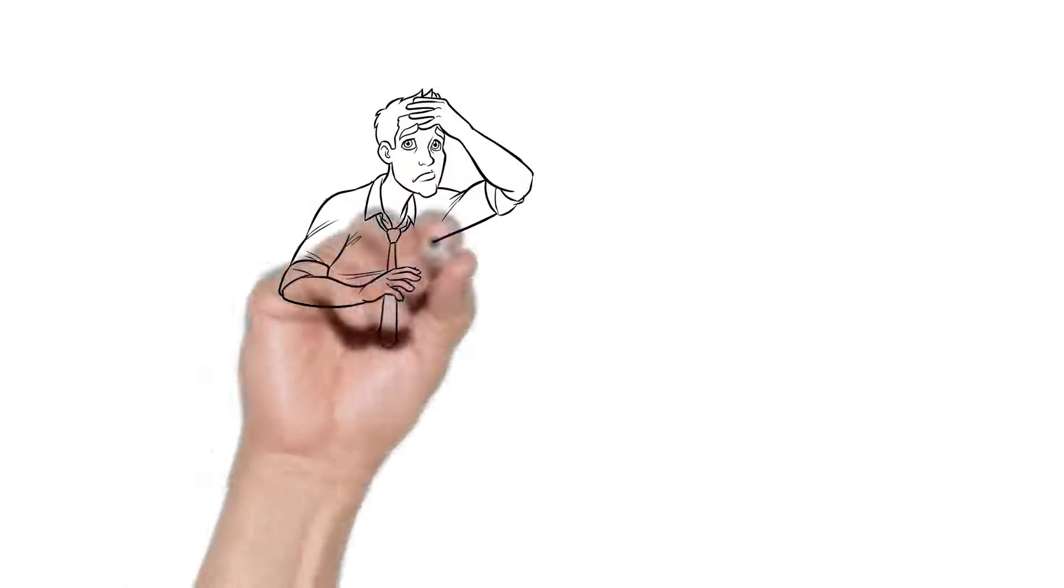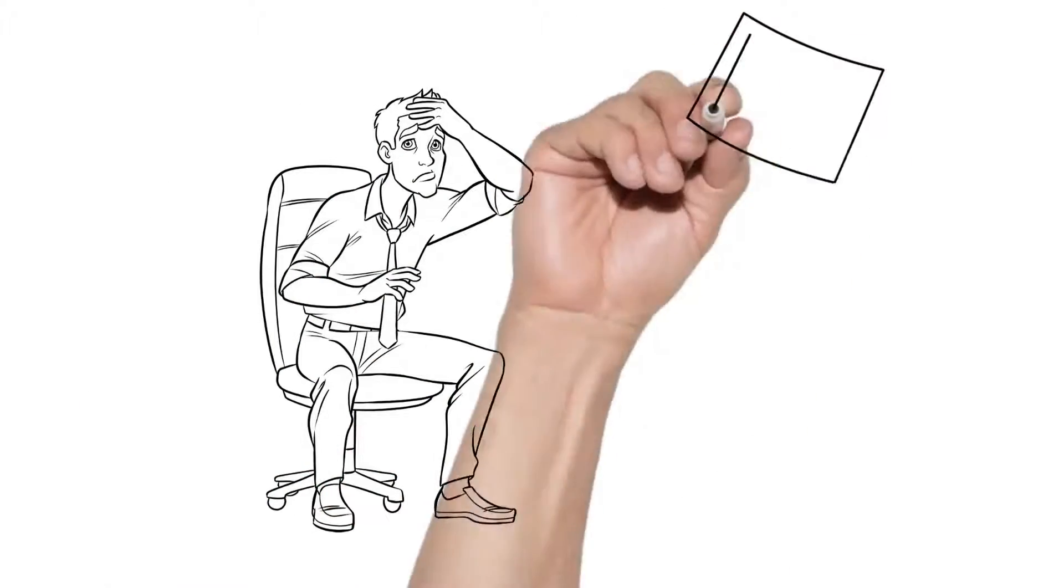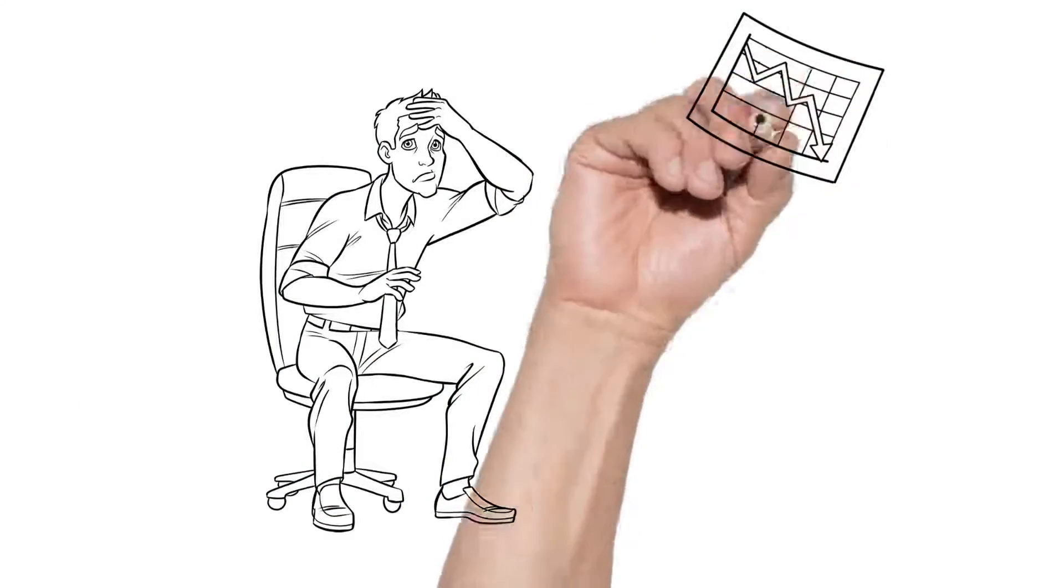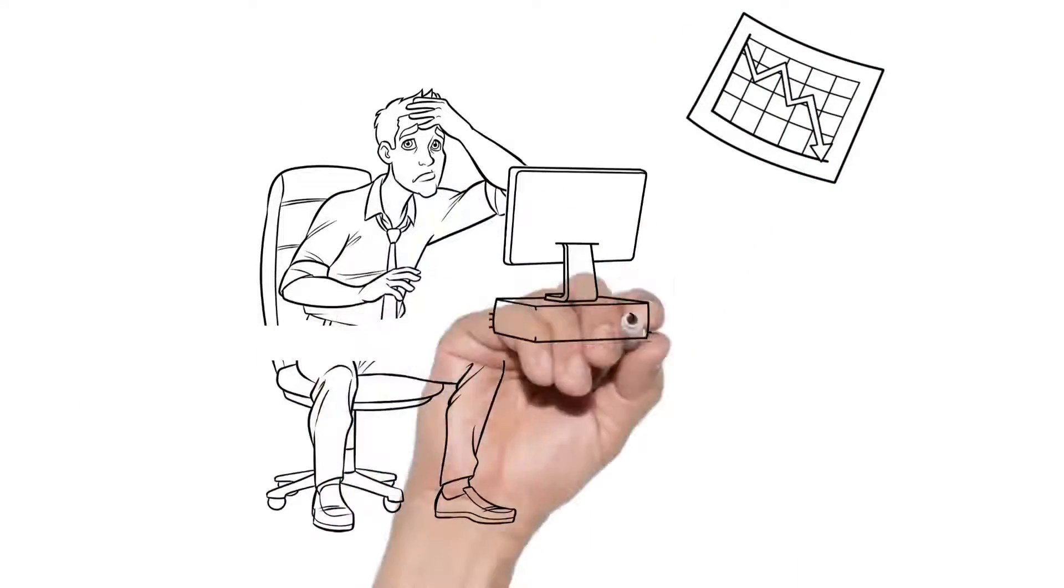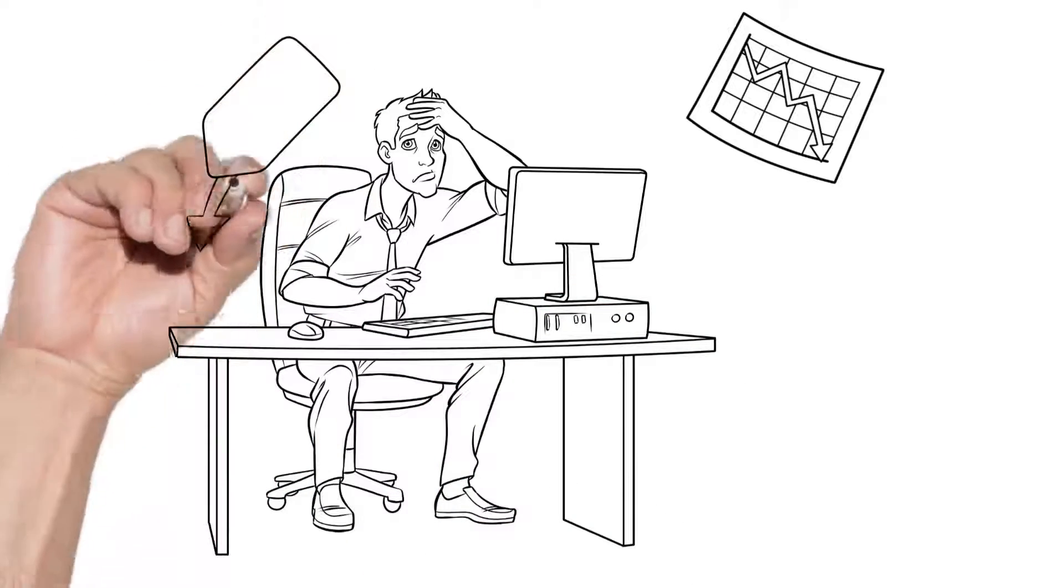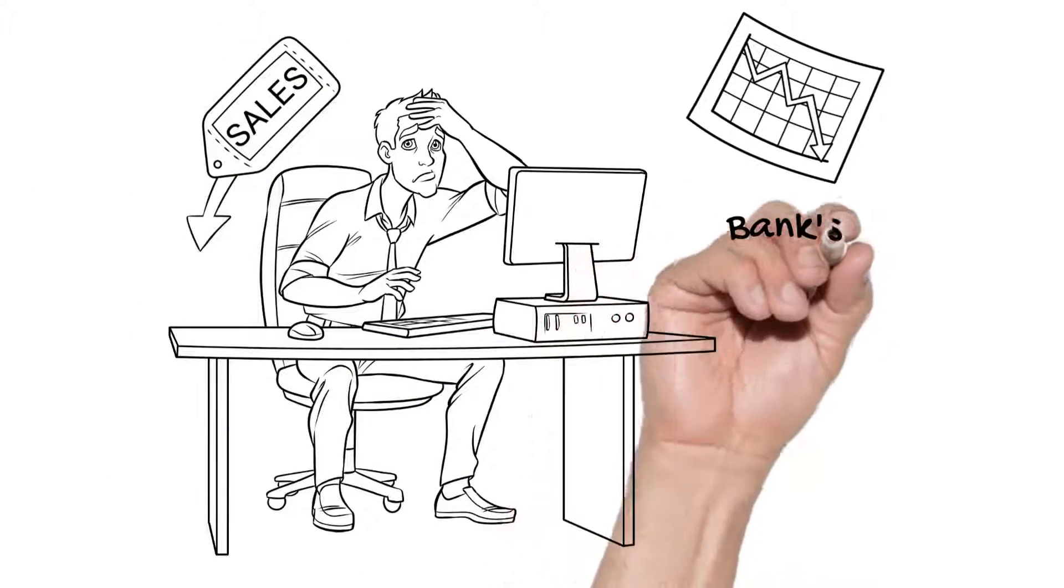An unexpected slowdown in the economy can mean some borrowers get behind on their payments, and some loans may not get repaid at all. A bank can make financial losses if some of its risky loans are not repaid.